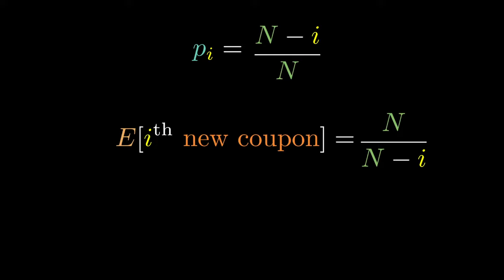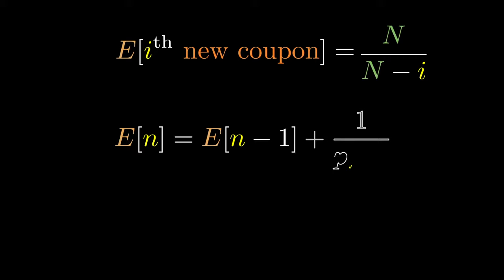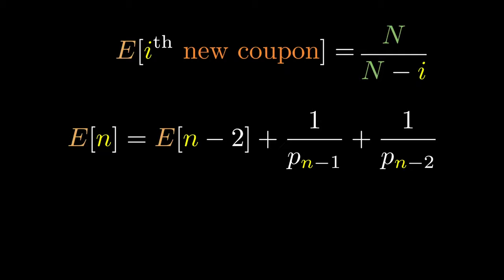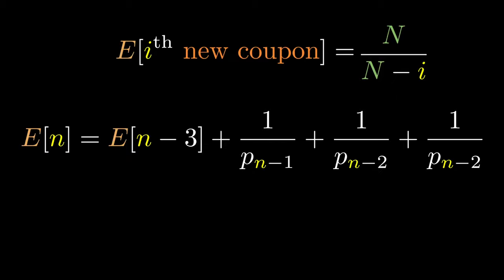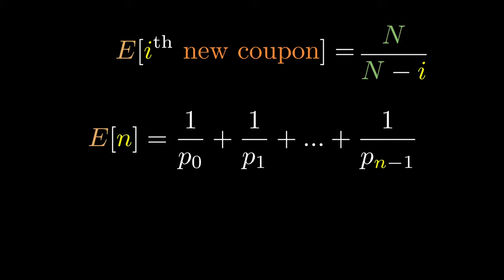Let E[N] denote the expected number of draws to get all N coupons. We can say that E[N] is equal to E[N - 1] plus 1 over p_(N - 1). This makes sense, it's just the same thing that we derived earlier except written formally. If we use the same formula again using the fact that E[N - 1] is equal to E[N - 2] plus p_(N - 2), we get this. If we do this again we get E[N - 3] plus this sum. And if we keep doing this until 0, we get E[N] is the sum of p_0 to p_(N - 1).